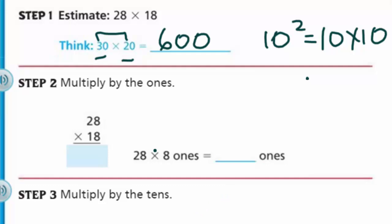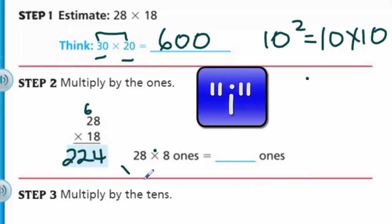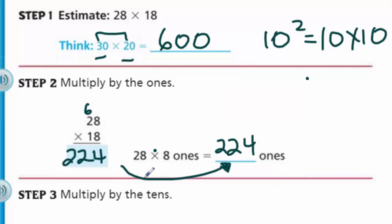Now let's look at step 2: multiply by the ones. So here we're going to say 8 times 8 is 64. We put our 4 here and carry the 6 into the tens place. Now we multiply that 8 ones with the 2 tens, and there are 6 tens carried above, so that's 16 plus 6, which gives us 22 tens. This is a partial product, so that's 224 ones because this 8 is in the ones place. So we were multiplying the ones place value — that's our partial product of 224.